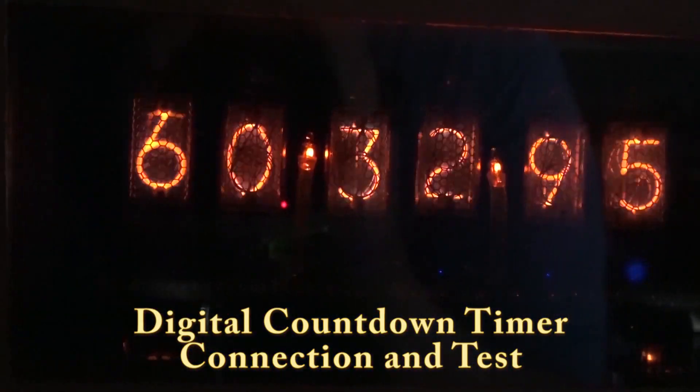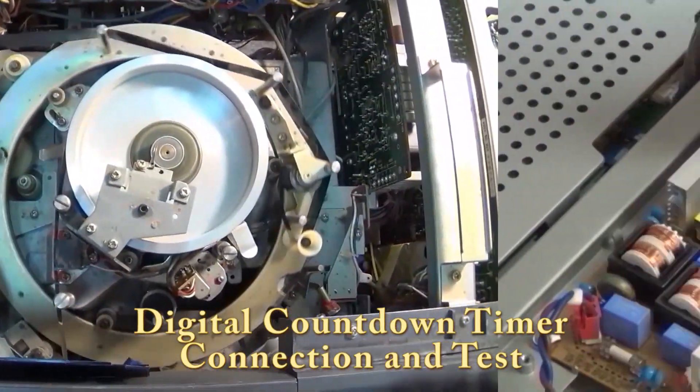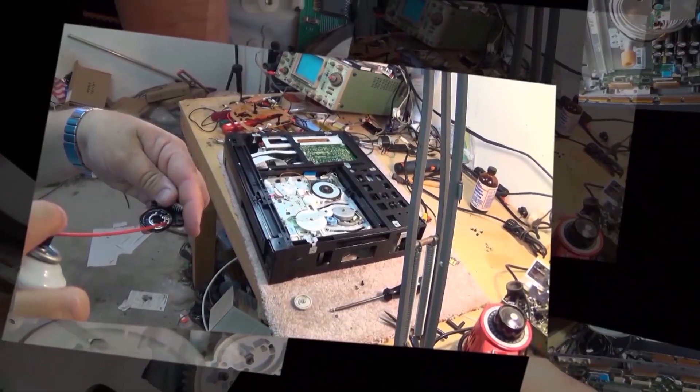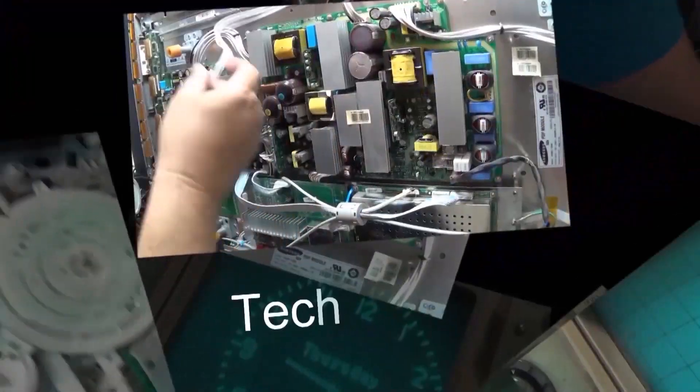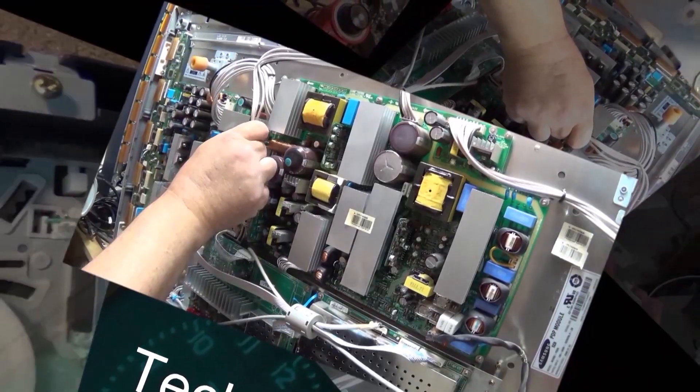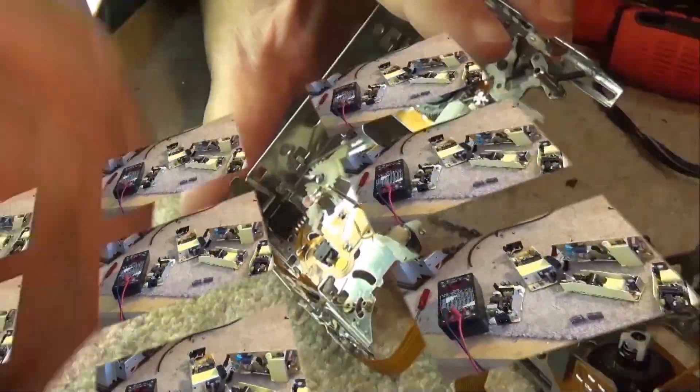In today's video I'm going to look at a little module I got from IC station. This is a 1 minute to 24 hour digital countdown timer for timing lights or timing your stereo or whatever you want to turn off after a specified time. Let's take a look at it.